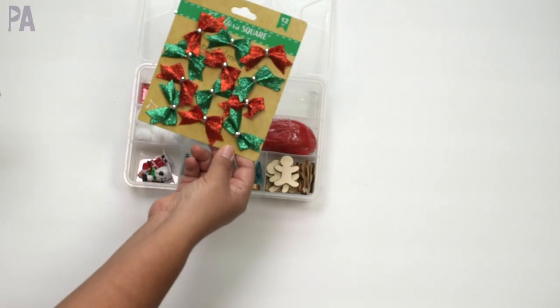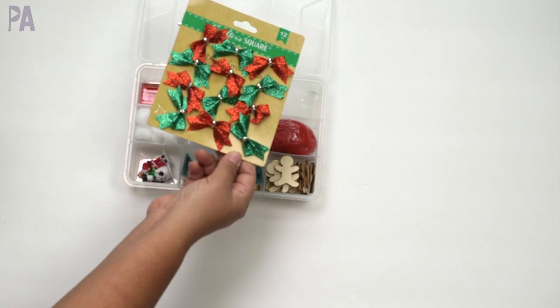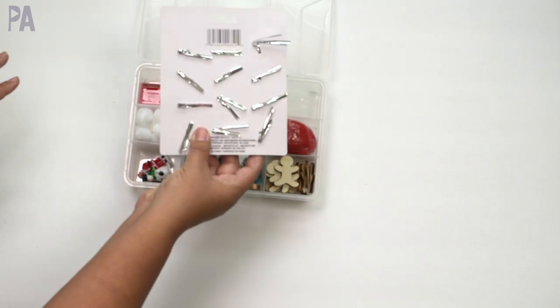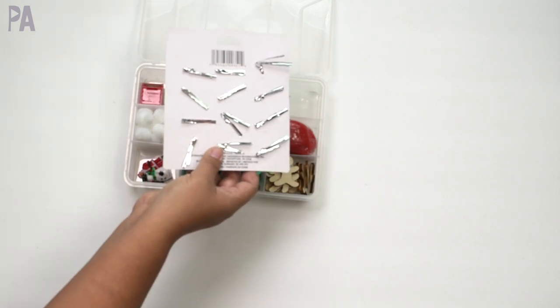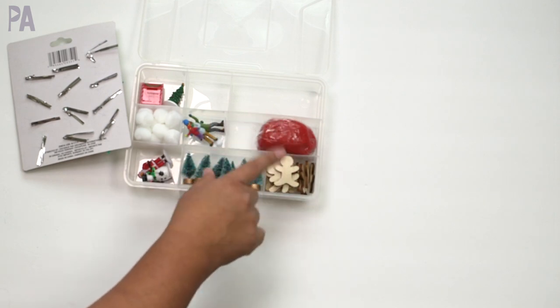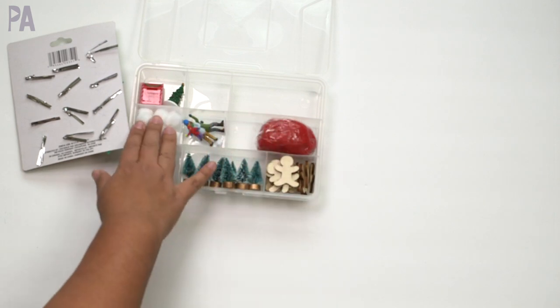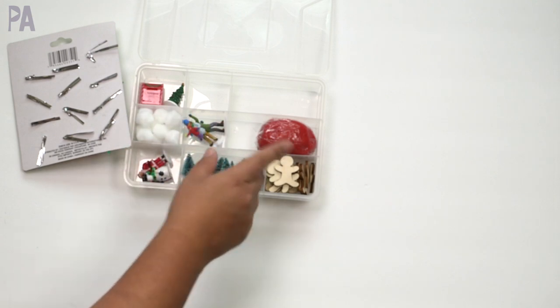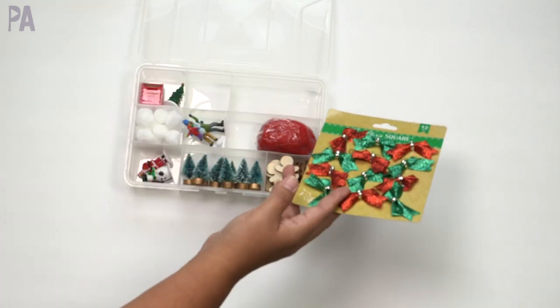Next up, I have some bows in those same color schemes that I'm trying to go with, the red and the green. These have ties on the back. So listen, it depends on your child. Of course you're going to need to supervise. And these are not for kids that are oral, meaning they put things in their mouth. If your child does that, these are not for you because all of these items are obviously choking hazards.